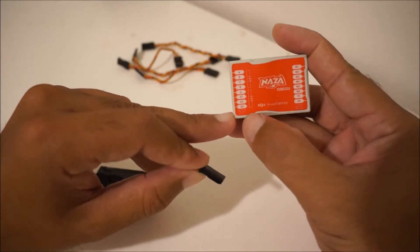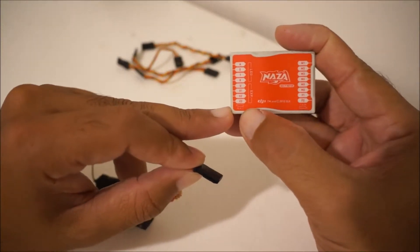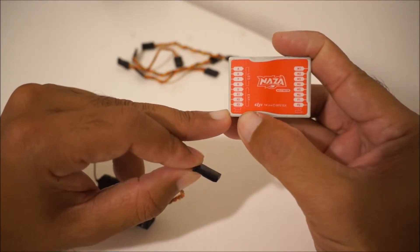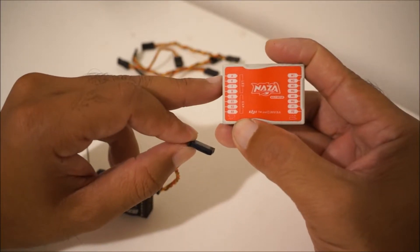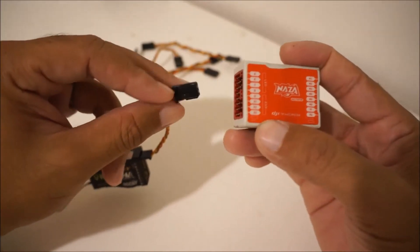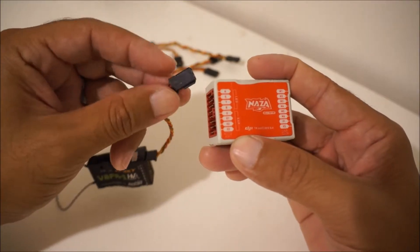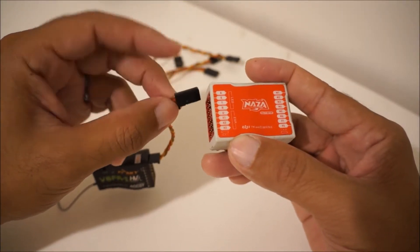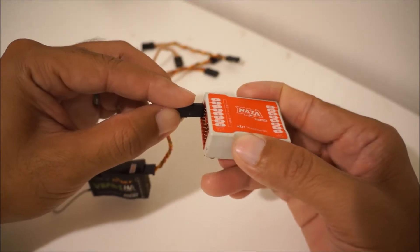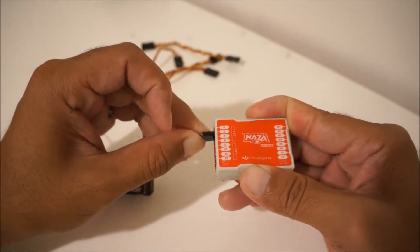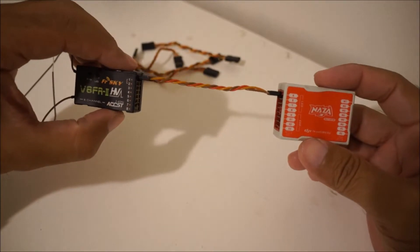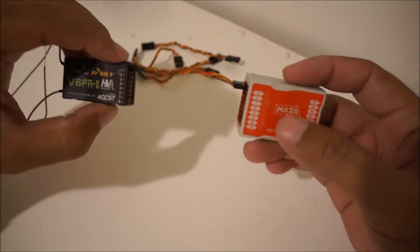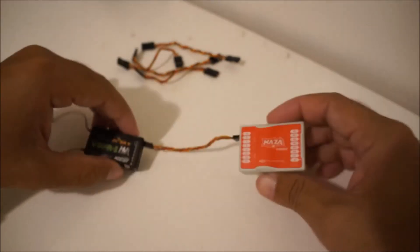On this one it has a little diagram here in the bottom. It tells you exactly where the positive is. On this one it's in the middle and negative is on the top. So that's your aileron channel to your aileron on your flight controller.